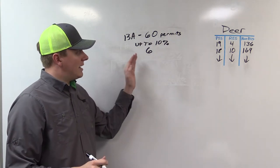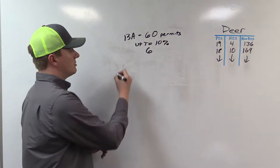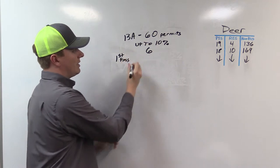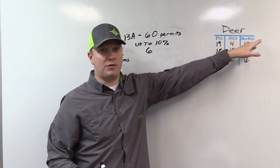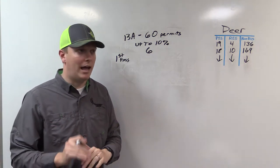Historically, what has happened, the 10% cap applied even in the bonus pass. So they would do the first pass, and they would give all 6 of those tags to the non-residents. So if you did not have maximum points, you had no chance of drawing 13A whatsoever. You weren't even in the drawing by the time they got to the second pass.